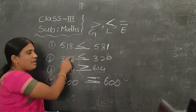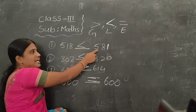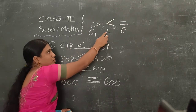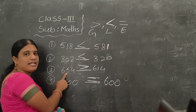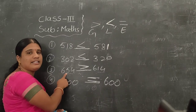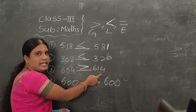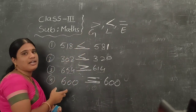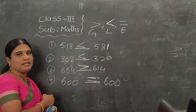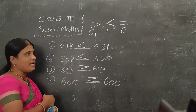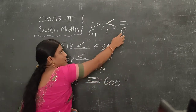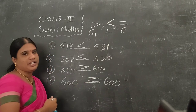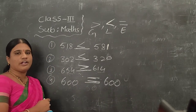So, how do you choose the symbol? If the first number is smaller than the second number, you use the less than symbol. If the first number is greater than the second number, you use the greater than symbol. And if the two numbers are equal, then you use the equal symbol.